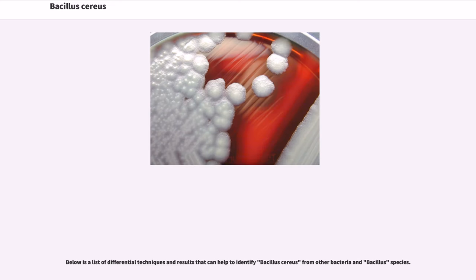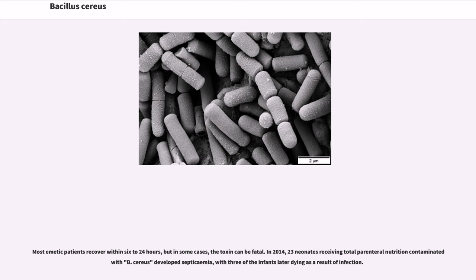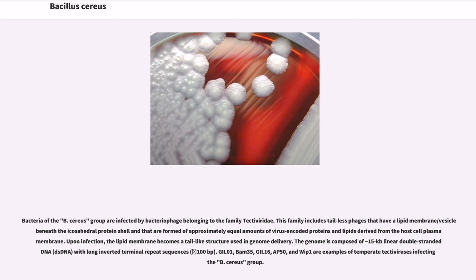Below is a list of differential techniques and results that can help to identify B. cereus from other bacteria and B. cereus species. Most emetic patients recover within 6 to 24 hours, but in some cases the toxin can be fatal. In 2014, 23 neonates receiving total parenteral nutrition contaminated with B. cereus developed septicemia, with 3 of the infants later dying as a result of infection. Bacteria of the B. cereus group are infected by bacteriophage belonging to the family Tectiviridae. This family includes tailless phages that have a lipid membrane/vesicle beneath the icosahedral protein shell, formed of approximately equal amounts of virus-encoded proteins and lipids derived from the host cell plasma membrane. Upon infection, the lipid membrane becomes a tail-like structure used in genome delivery.